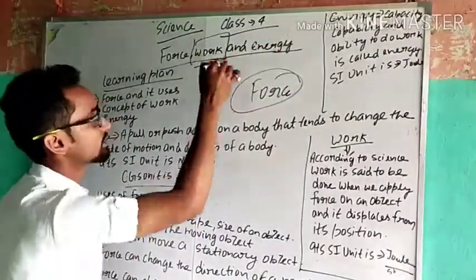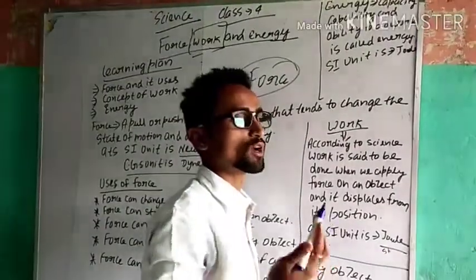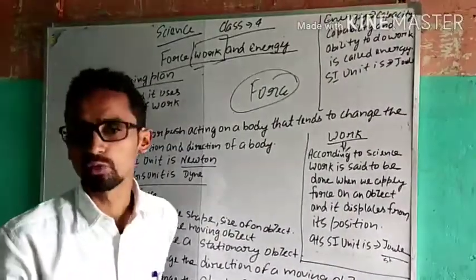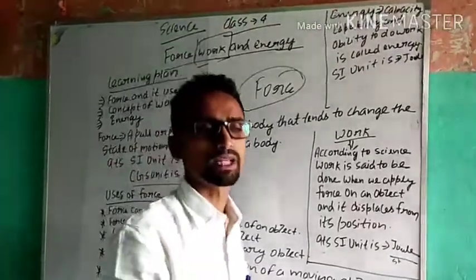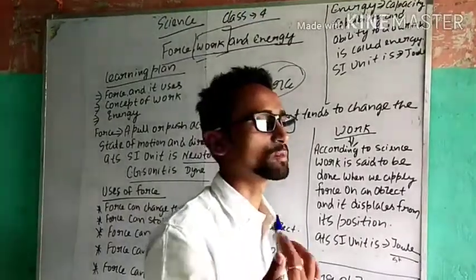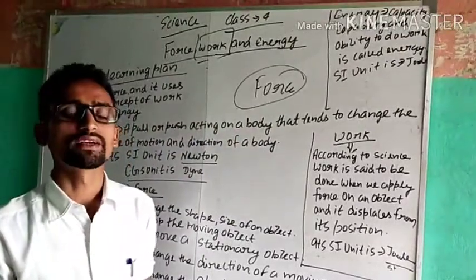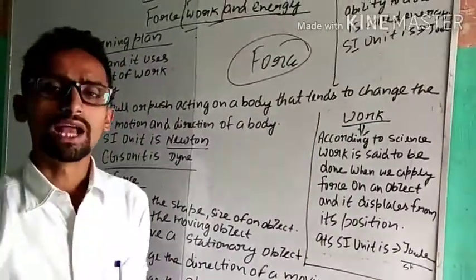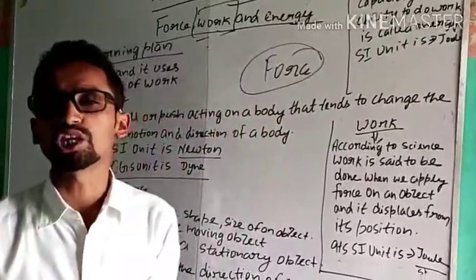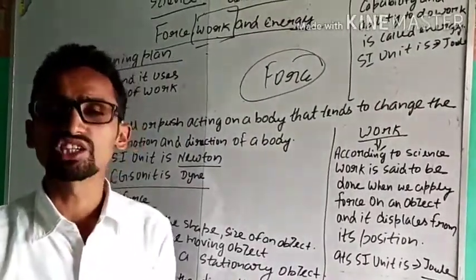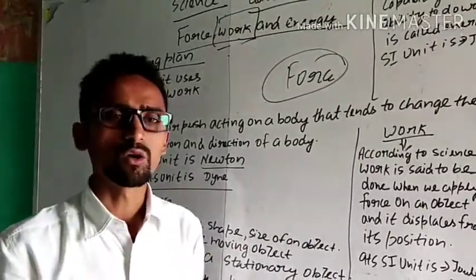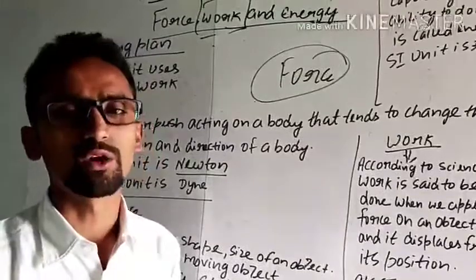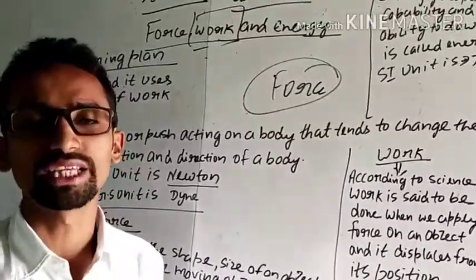Now, work — according to science, when can we say that work is done and when is work not done? According to science, work is only done when we apply a force on an object and it displaces from its position, meaning the position of the object changes. Then we can say that according to science, work is done. Otherwise, if a laborer is holding 50 kg of weight and standing at a position without changing position with respect to time, then according to science, work is not done. Work is done only when we apply force on an object and it is displaced from its position.